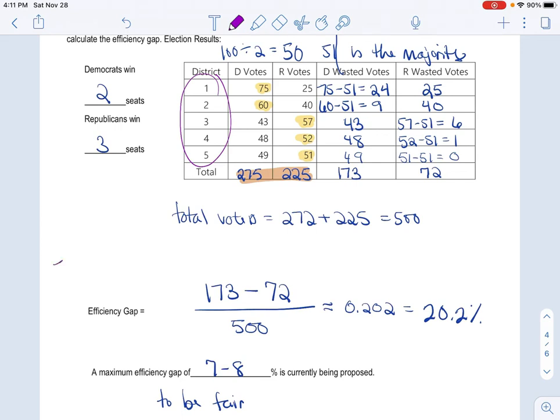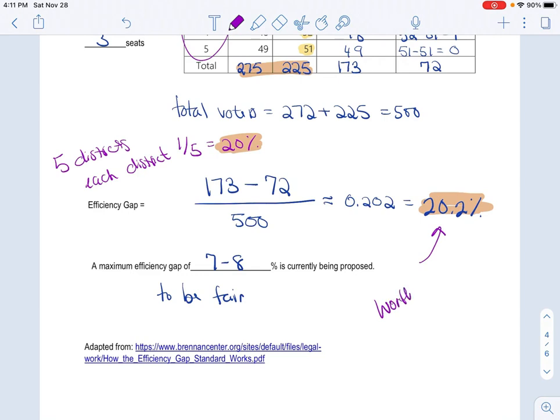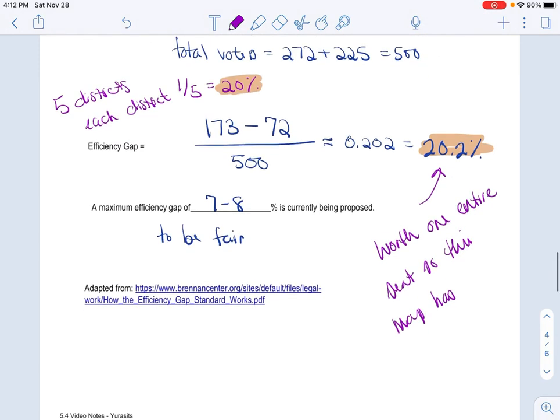And that means we have five seats. So if you have five districts, that's five districts. So each district, hopefully this makes sense to you, is 1 fifth, which is about 20, is exactly 20%. So the fact that this thing is larger than an entire seat, that means that this is worth one entire seat. So this map has clearly been gerrymandered.